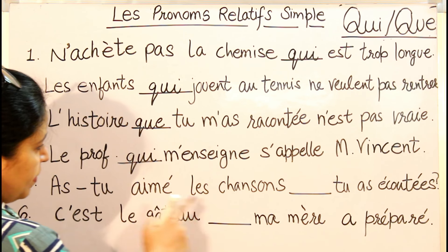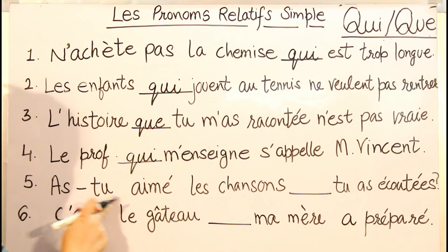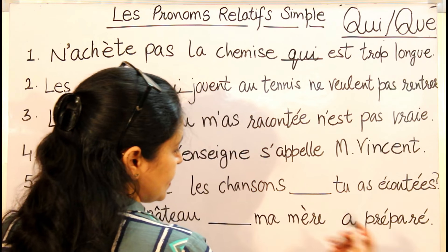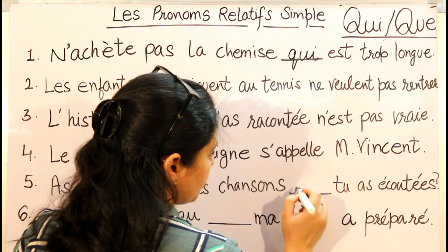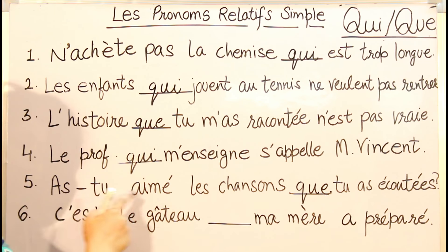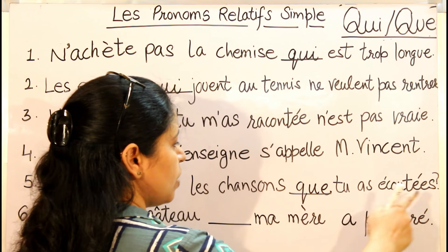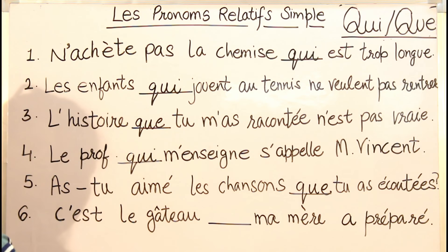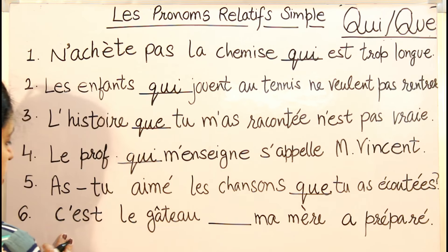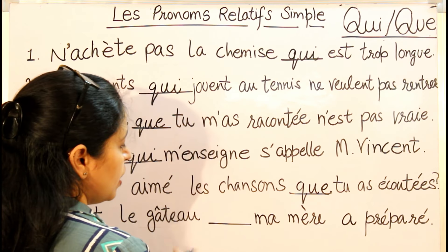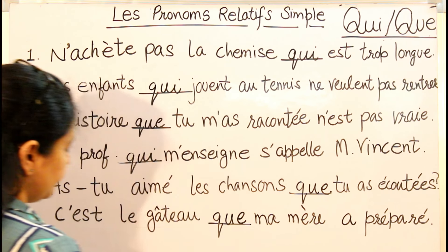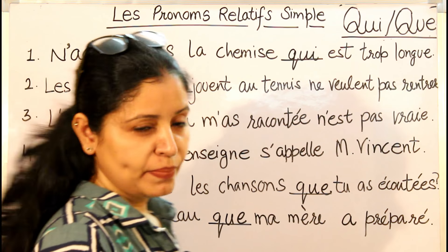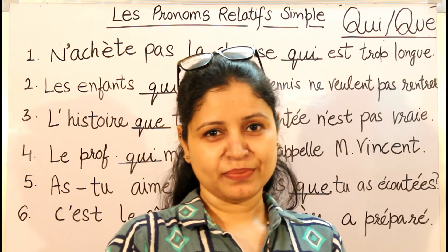Fifth: 'As-tu aimé les chansons [blank] tu as écoutées?' — did you like the songs you heard? After the blank there is a pronoun, so we write QUE: 'As-tu aimé les chansons QUE tu as écoutées?' Sixth: 'C'est le gâteau [blank] ma maman a préparé' — this is the cake my mother prepared. Here 'maman' is a noun after the blank, so we write QUE. That was all about les pronoms relatifs simples QUI and QUE. Thank you!